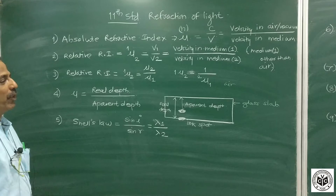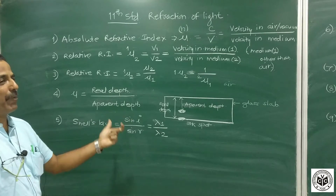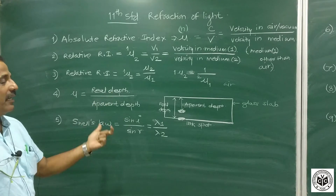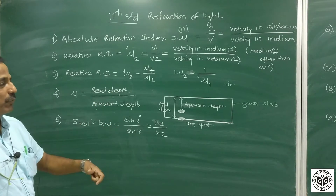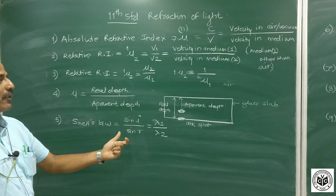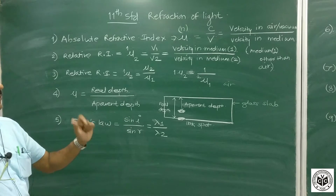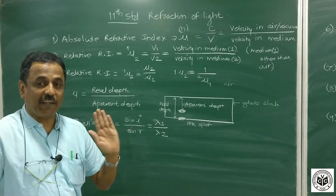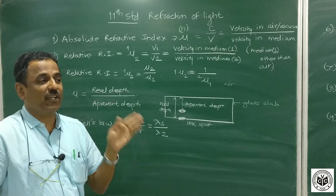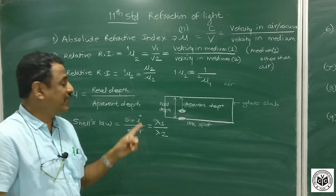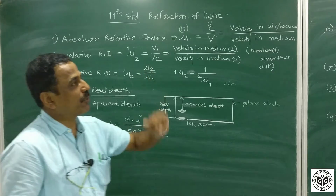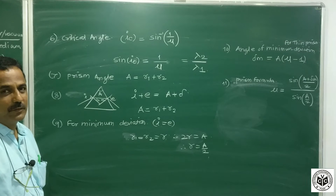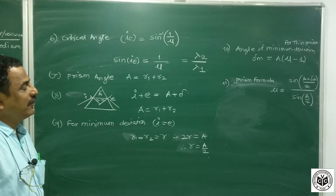The fifth point is Snell's Law. The angle i is always in medium 1 and r is always in medium 2. The ratio sin i upon sin r equals lambda1 upon lambda2. Basically, when light travels from one medium to another, there is no change in frequency — remember that well. There is always a change in wavelength, and that is why the ratio of wavelengths appears in the expression.